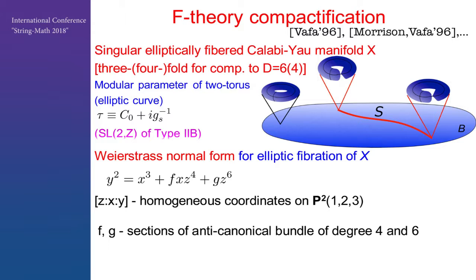The standard parameterization of such an elliptic fibration is represented by Weierstrass normal form, where the homogeneous coordinates X, Y, and Z are those of weighted projective space P(1,2,3), and the f and g sections in the fibration are parametrized via anti-canonical bundles — sections of anti-canonical bundles of degree four and six respectively.